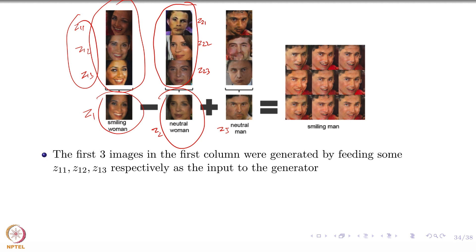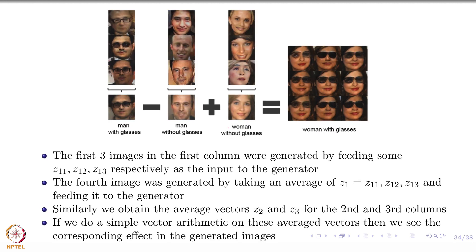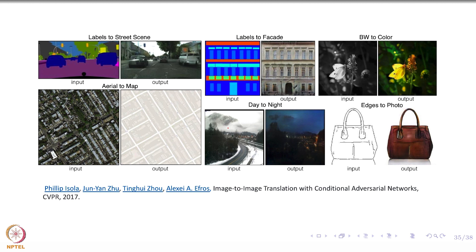You do some vector arithmetic: Z1 minus Z2 removes the woman part, so you just get smiling. Then you add a man to it and you get these creepy-looking smiling men. That is the vector arithmetic you can do on the latent space. Here is another example: you take a man with glasses, subtract the man without glasses from it, add a woman, and then you get stylish-looking women with glasses. So this is the quality of generated images that people hype about.